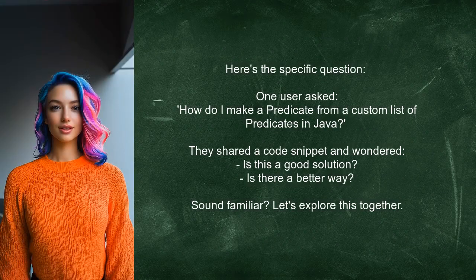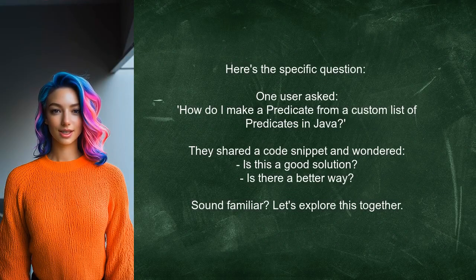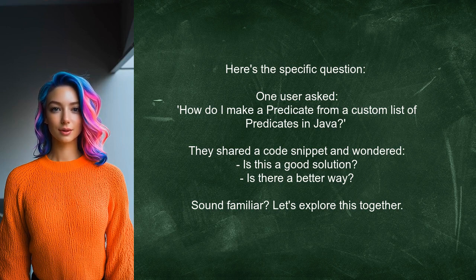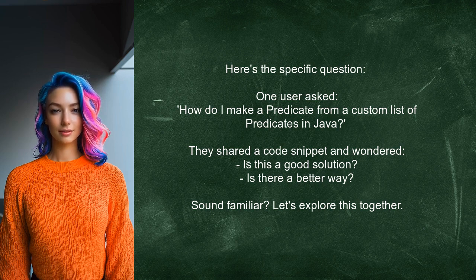Let's take a look at the specific question at hand. One user recently asked: how do I make a predicate from a custom list of predicates in Java? They shared a code snippet and wondered if their solution was good or if there was a better way to approach this.